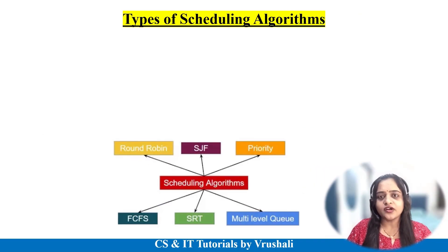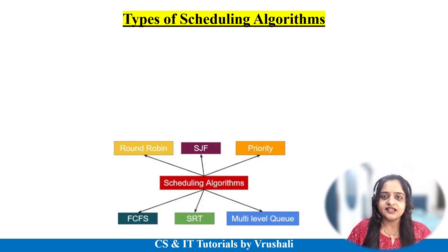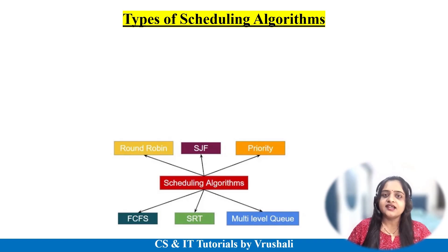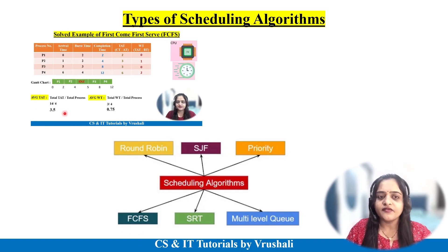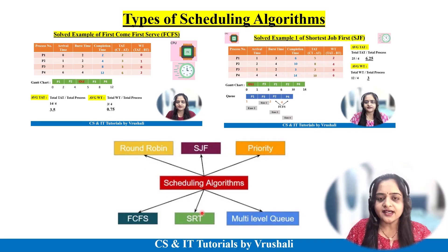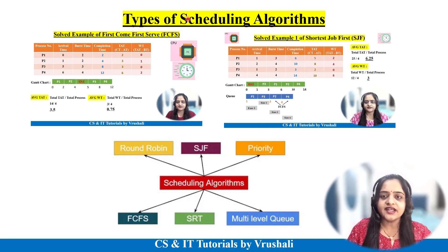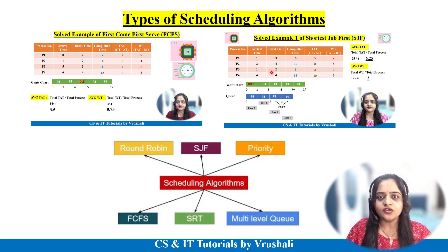The first thing is: what are the different types of scheduling algorithms? As we discussed earlier, there is a scheduler in the operating system. The scheduler decides the time of each and every process for execution. Previously we have discussed FCFS and SJF with solved examples. I have attached links to both videos in the description box. As per your exam point of view, all these examples are important, so prepare accordingly.